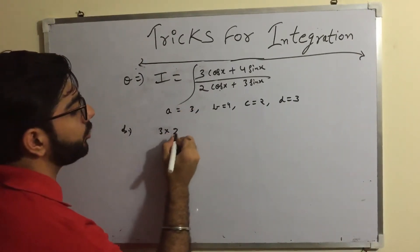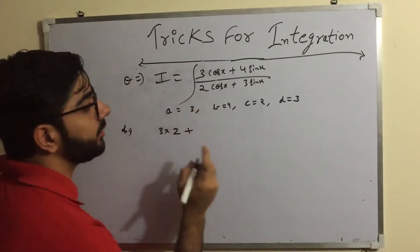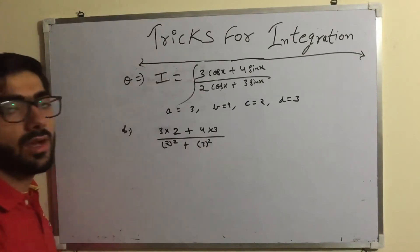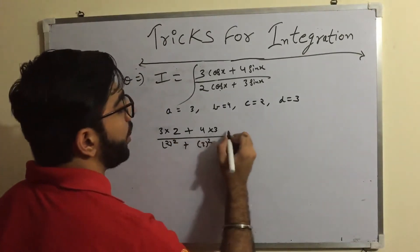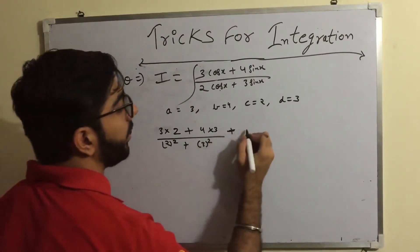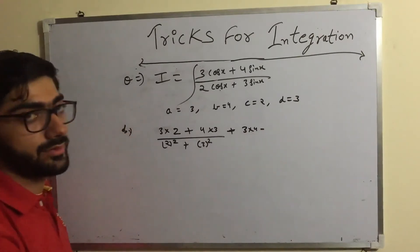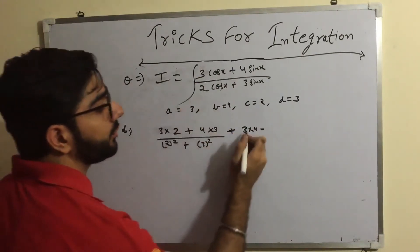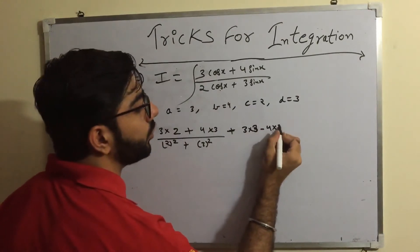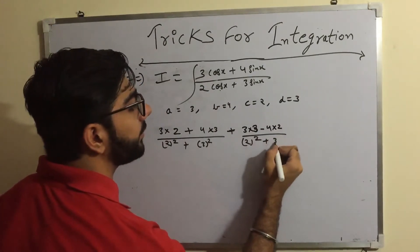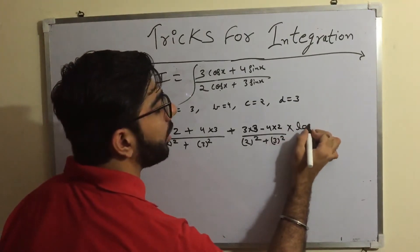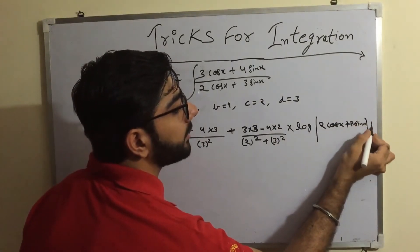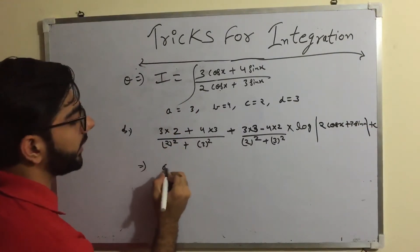Now apply the trick: a×c = 3×2, plus b×d = 4×3, divided by c² + d² = 2² + 3². Then for the cross multiplication term: a×d minus b×c = 3×3 minus 4×2, divided by 2² + 3², multiplied by log|2cosx + 3sinx| + C.